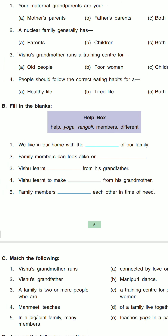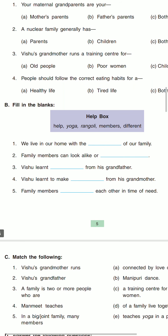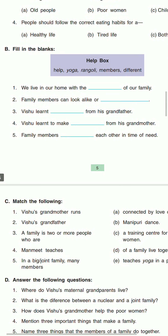Come to question number four: people should follow the correct eating habit for a — options are healthy life, tired life, and both. The correct answer is A — healthy life. Option A is correct for this question.